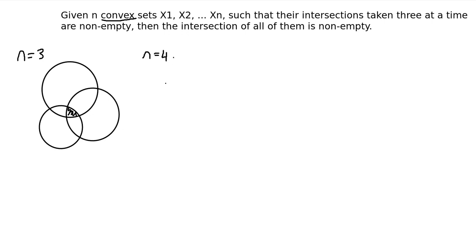Then, we're looking at the intersections of them taken three at a time. That gives us four different sets. Let me write these out. We have X1 intersect X2 intersect X3; X1 intersect X2 intersect X4;